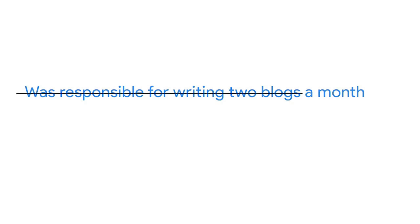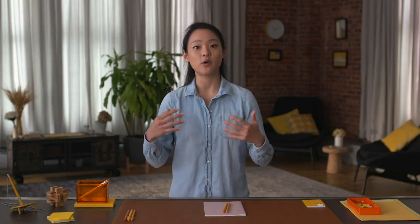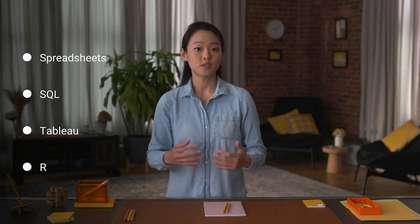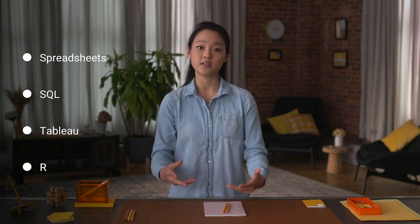One strategy you can use in your summary and throughout your resume is PAR statements. PAR stands for Problem, Action, Result. This is a great way to help you write clearly and concisely. So instead of saying 'was responsible for writing two blogs a month,' you'd say 'earned a little-known website over 2,000 new clicks through strategic blogging.' The website being little known is the problem, the strategic blogging is the action, and the 2,000 new clicks is the result. Adding PAR statements to your job descriptions or skills section can help with organization and consistency in your resume. Speaking of the skills section, make sure you include any skills and qualifications you've acquired through this course. Talking about your experience with spreadsheets, SQL, Tableau, and R will enhance your resume and your chances of getting a job.